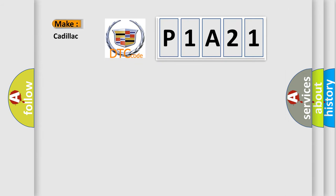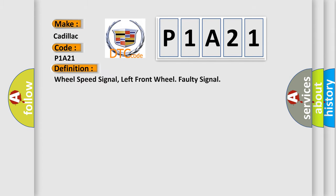So, what does the diagnostic trouble code P1A21 interpret specifically for Cadillac car manufacturers? The basic definition is wheel speed signal, left front wheel faulty signal.